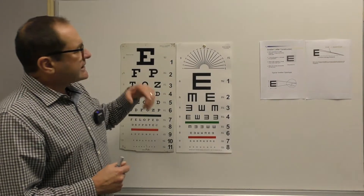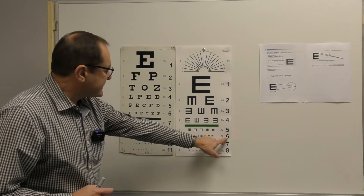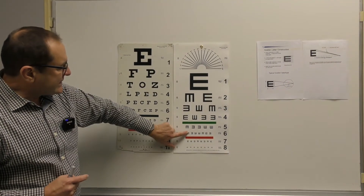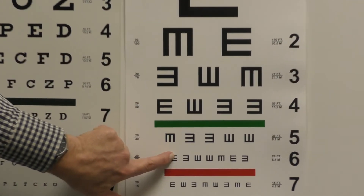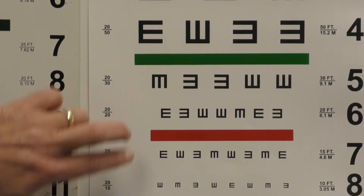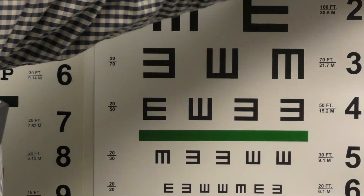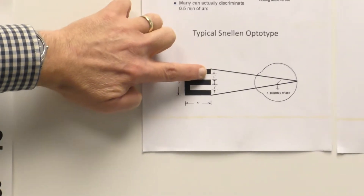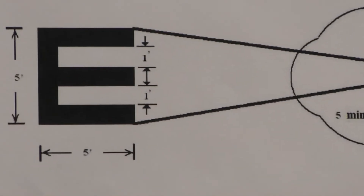At 6 meters, if you look at the 6/6 line, two cones will be able to distinguish that distance. One letter is actually 5 minutes of arc — 1, 2, 3, 4, 5 minutes of arc.